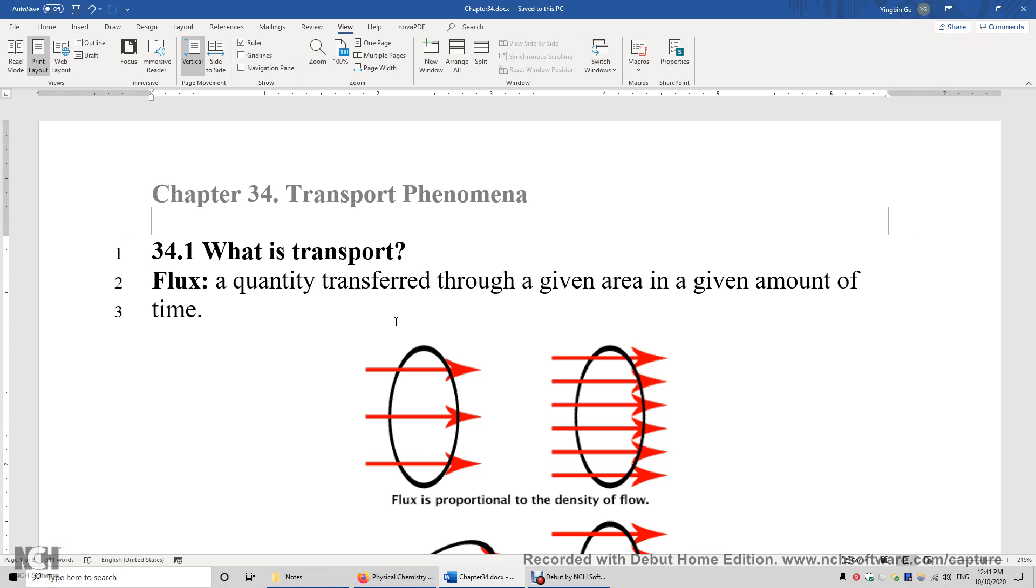Let's define flux. Flux is a quantity transferred through a given area in a given amount of time. For example, if we are looking at the flux of gas particles, then this is the amount of gas particles transferred through this given area per unit time.